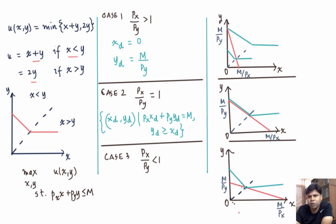So let's write those two equations. So the solution satisfies yd equals xd, and it also satisfies px xd plus py yd equals m.